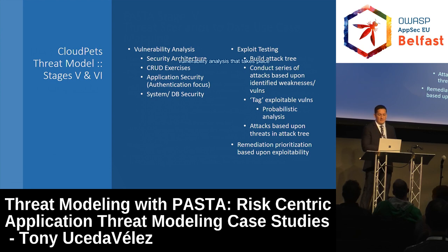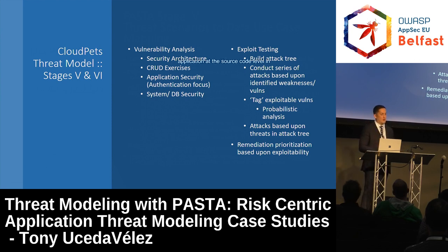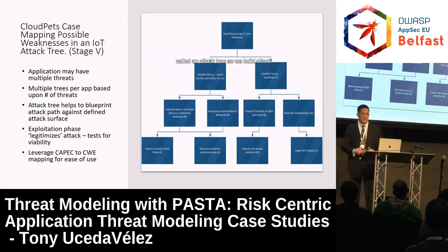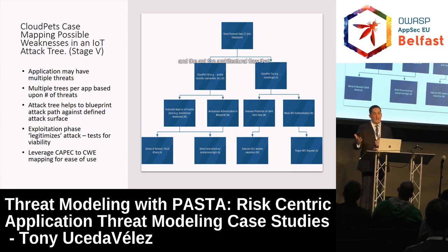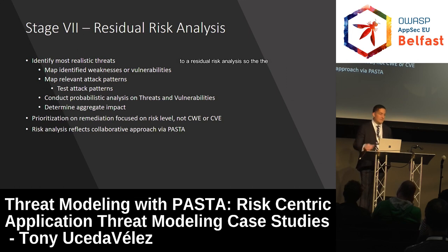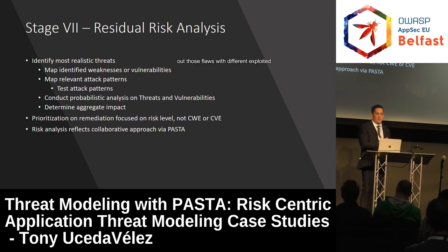Stage five of PASTA — vulnerability analysis — looks at all the different activities to see what's wrong with our application: at the source code level, the implementation model, and the design model. In stage six, we build attack trees to exercise the viability of exploits. If the weaknesses had been identified and abuse cases tested, CloudPets could have easily found multiple insecure implicit trust scenarios and the architectural flaw. At the end, we're trying to get to a residual risk analysis — enumerating technology flaws and testing them with exploitative techniques comes down to what requires remediation the most.